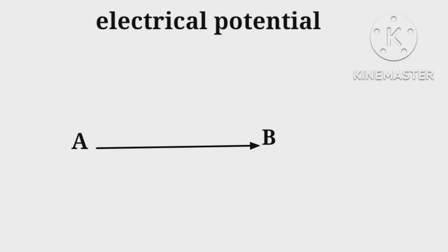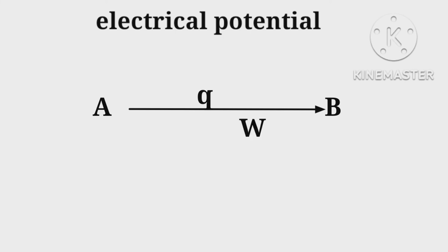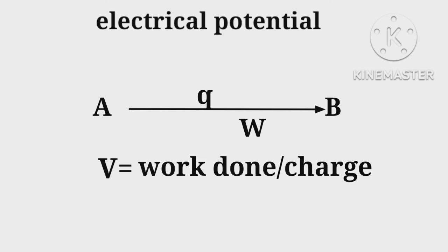Let a charge Q move from A to B. In doing so, let work done be W. Therefore, we define potential as V = W/Q, which equals work done per unit charge.